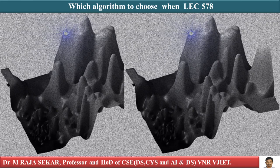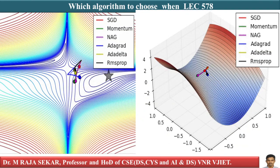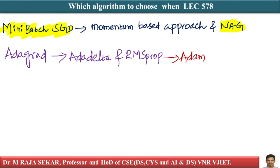Welcome to Raj Shaker Classes on Applied Data Science with Python. This is lecture number 578. In this lecture, we will try to understand which algorithm to choose and which optimizers to use. We have seen the spectrum of optimizers: mini-batch SGD, momentum-based approaches, NAG, then AdaGrad with adaptive gradients, AdaDelta, RMSProp, and Adam.